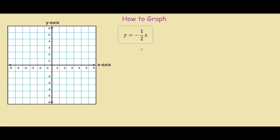To find the y-intercept, we know that the y-intercept lies on the y-axis where x equals zero. So if we know x equals zero, we can plug it into our equation over here and we get that y equals negative half times zero, which equals zero. So that means the y-intercept lies at x equals zero and y equals zero.